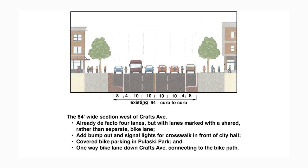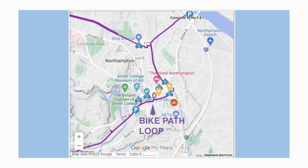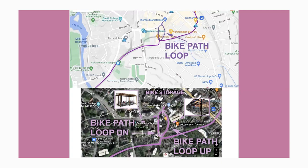We're going to start with an overview image of a map, and you'll see on your screen the purple line that extends in kind of a Y across the screen is our existing bike trail. There's an arrow that says bike path loop you can see in the center of the screen — that's what we're proposing to build to connect the bike trail to Main Street.